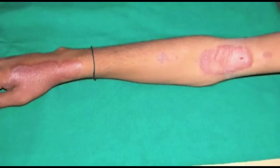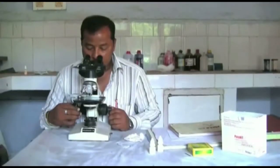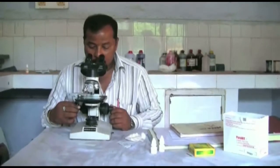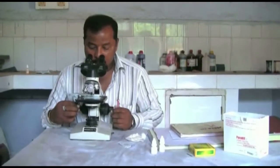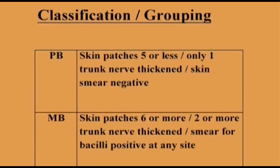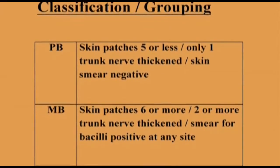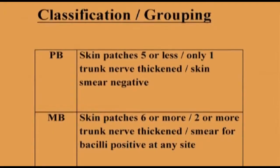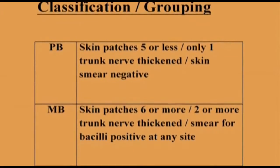Count the skin patches. If you find 5 patches or less, classify the patient as PB. If you find more than 5 patches, classify the patient as MB. If the diagnosis was difficult to make, a skin smear may have been made in the laboratory. If the skin smear is negative and the patient has 5 patches or less, classify as PB. If the skin smear is positive, classify the patient as MB, whatever the number of skin patches.